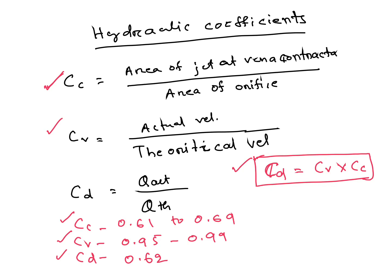And one more formula is important here: Cv = x/(2√(yH)). This is for trajectory orifice. This formula is very very important.